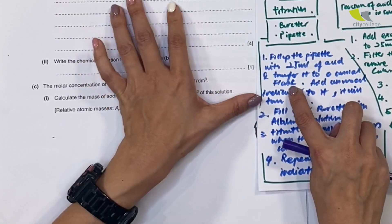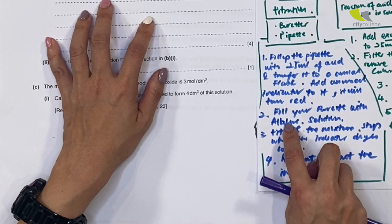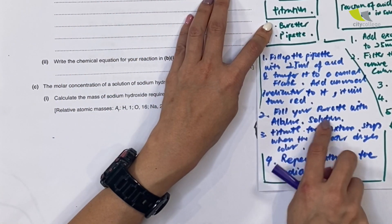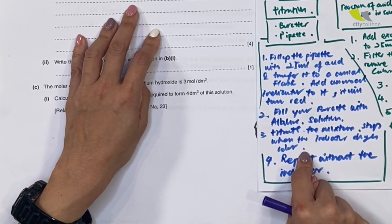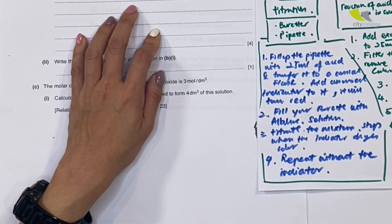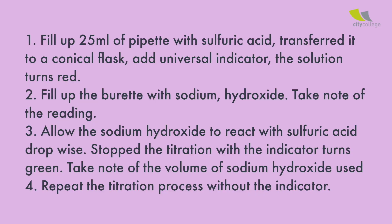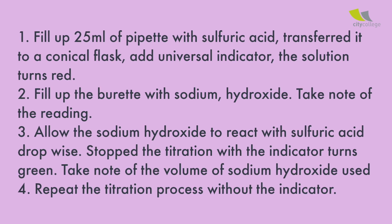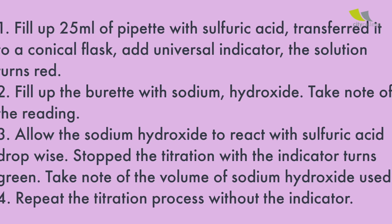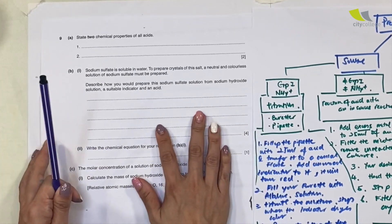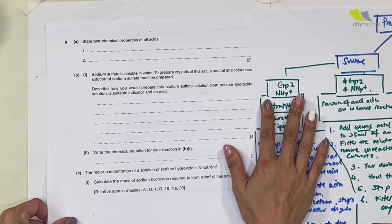Add universal indicator to it and it will turn red. Fill your burette with sodium hydroxide solution. Step three, titrate the mixture and stop when the indicator changes colour to green because a salt is formed. They ask you to prepare the solution, so repeat the whole thing without the indicator — that's how you get your four marks. This is titration. Very simple, and it's very worthwhile to remember the steps.